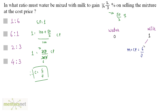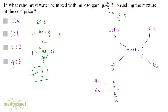Now let's apply the allegation rule. On the left-hand side we have 1 minus 6/7, which is 1/7. On the right-hand side we have 6/7 minus 0, which is 6/7. So the quantity of the cheap (water) upon the quantity of the costly (milk) equals (1/7) divided by (6/7). The 7s cancel out, giving 1/6. So the ratio is 1:6 — Option A.